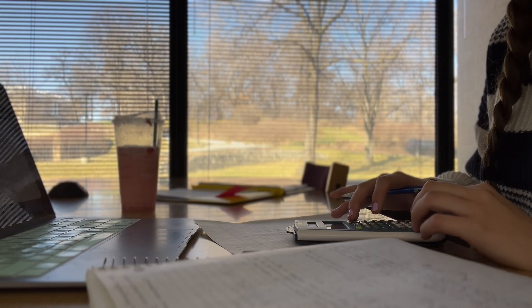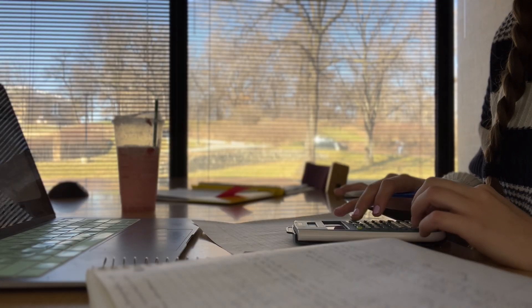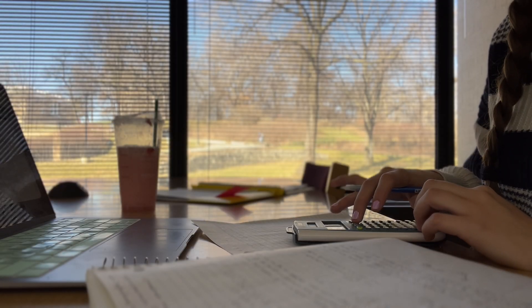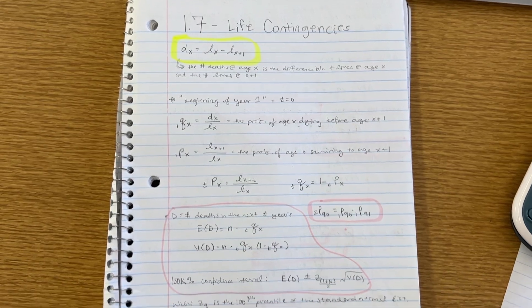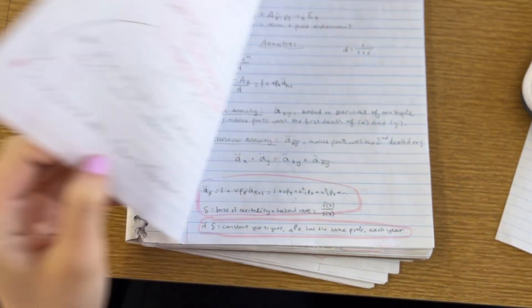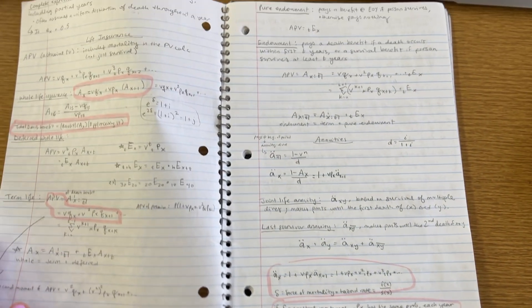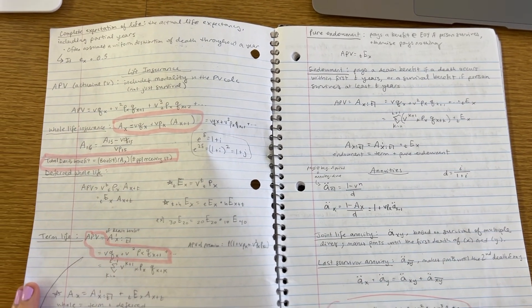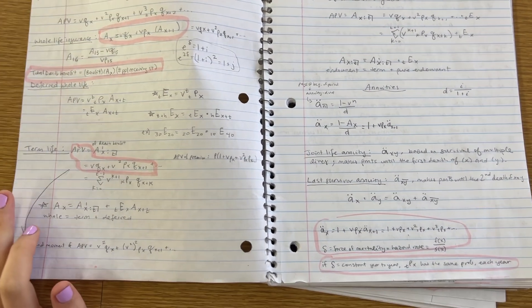All right, enough talking for now. Let me show you guys some of the things that I'm currently learning about for this exam. So life continuities is one of the topics that I did a practice quiz on today, which has to do with mortality rates and actuarial present values.